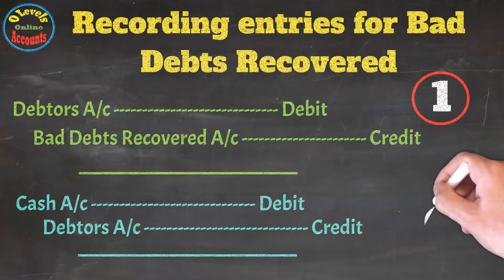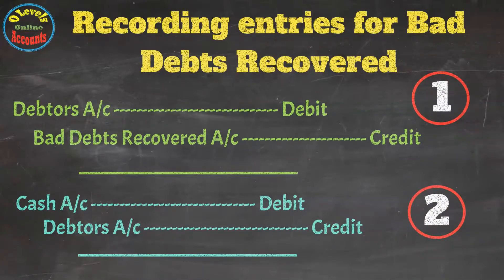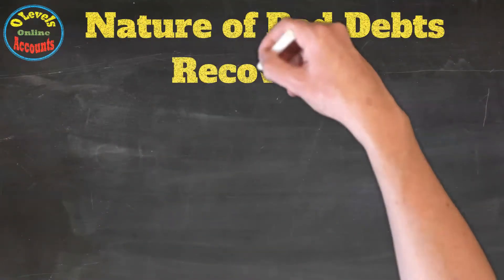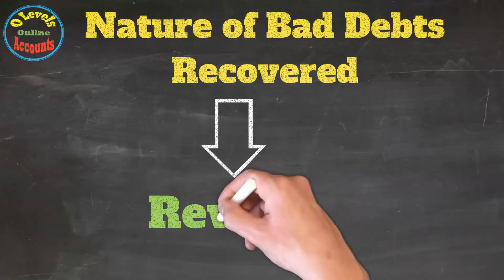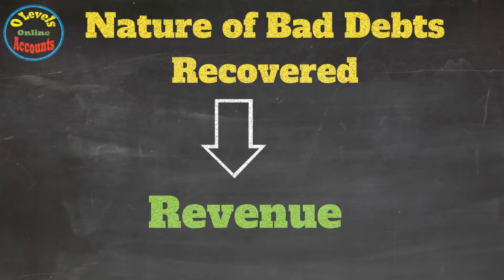The company closes the debtor's account because they don't want to continue further business with him. What is the nature of bad debts recovered? It is revenue in nature because it is a gain for the company, and all gains would fall under revenues.